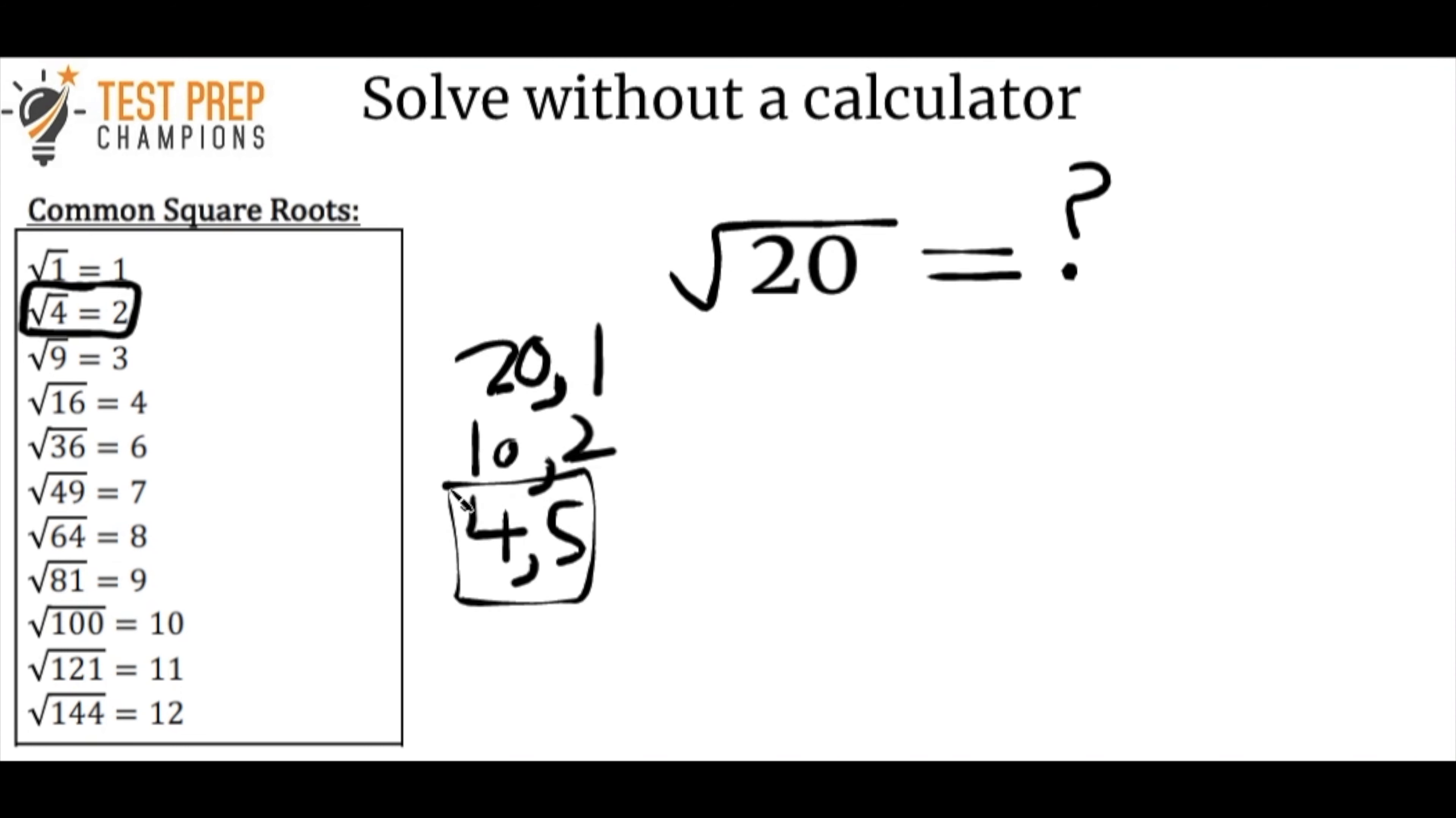And the trick is that you can rewrite the square root of 20 as the square root of 4 times 5. And again, the reason that we can do that is because 4 times 5 equals 20. So what I've just done is I've taken the square root of 20 and I rewrote it as the square root of 4 times 5.